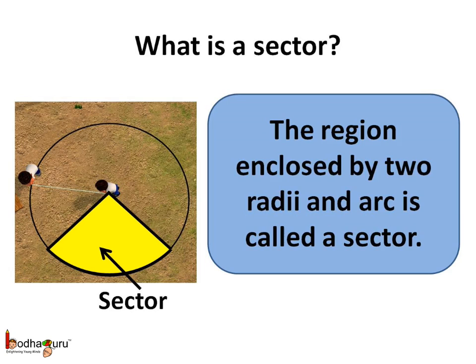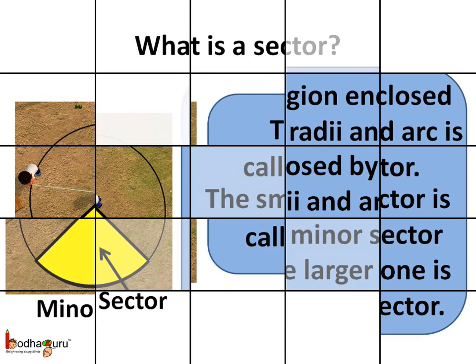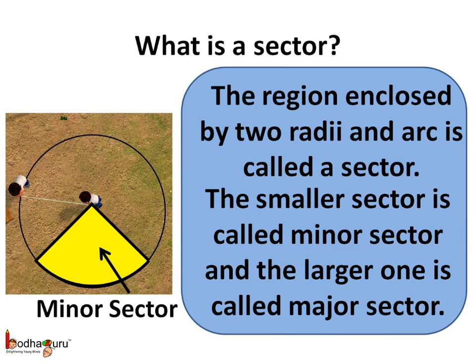And what is a sector? The region enclosed by two radii and the arc is called the sector. The smaller sector is called the minor sector and the larger one is called the major sector.